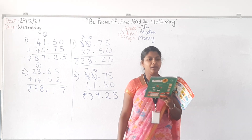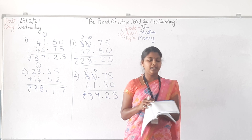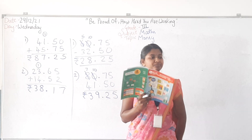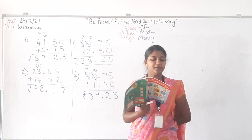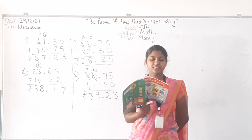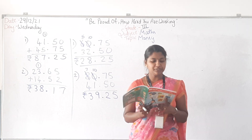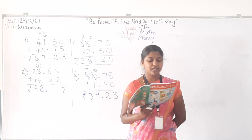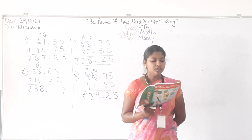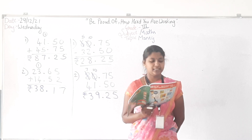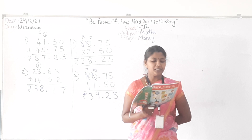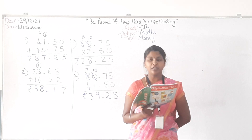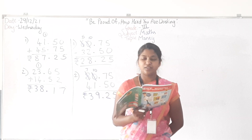Third question: Rupees 70 minus rupees 50 equals rupees 20. Fourth question: Rupees 20 plus rupees 10 equals rupees 30 — option D is the correct answer. Fifth: Rupees 50 minus rupees 10 equals rupees 40. Sixth: 40 paise plus 20 paise equals 60 paise. Seventh: Rupees 30 plus rupees 30 equals rupees 60. Eighth: 10 rupees plus 10 rupees equals 20 rupees. Ninth: 50 minus 40 equals 10 — that is rupees 10.